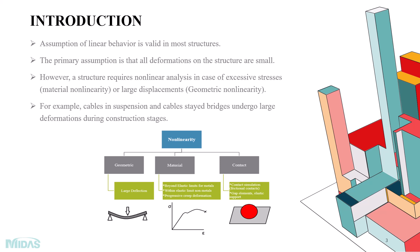The assumption of linear behavior is valid in most structures, with the primary assumption being that all deformation in the structure is very small. However, a structure requires nonlinear analysis in case of excessive stresses or large displacement. Nonlinear analysis can be classified into three types: geometric nonlinearity, where large deformation or deflections are considered while calculating element stiffness; material nonlinearity, where behavior beyond the elastic limit is considered; and contact, where boundary conditions change.